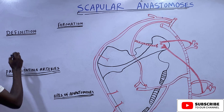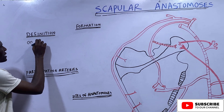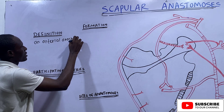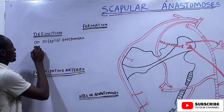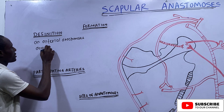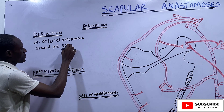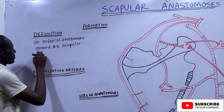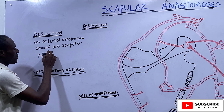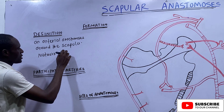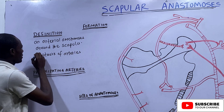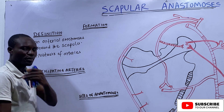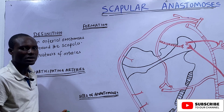So the Scapular Anastomosis is an arterial anastomosis — a network of arteries around the scapula. The scapula is a triangular thin plate of bone found at the posterolateral aspect of the thoracic cage.